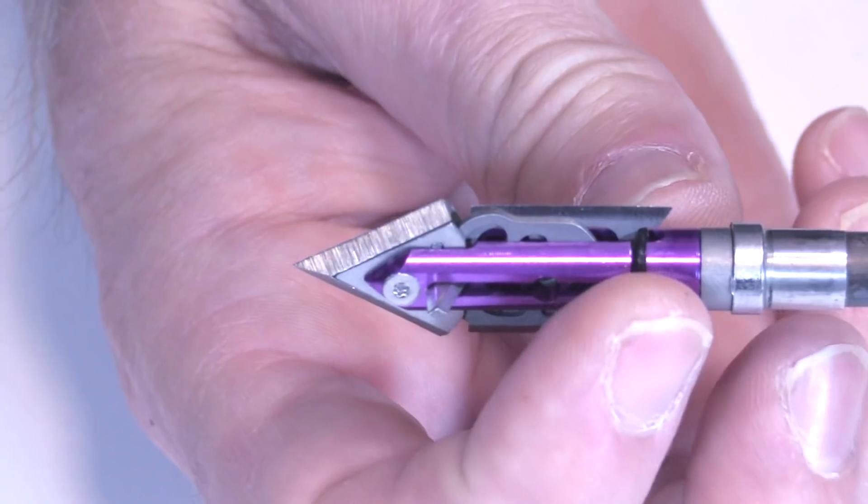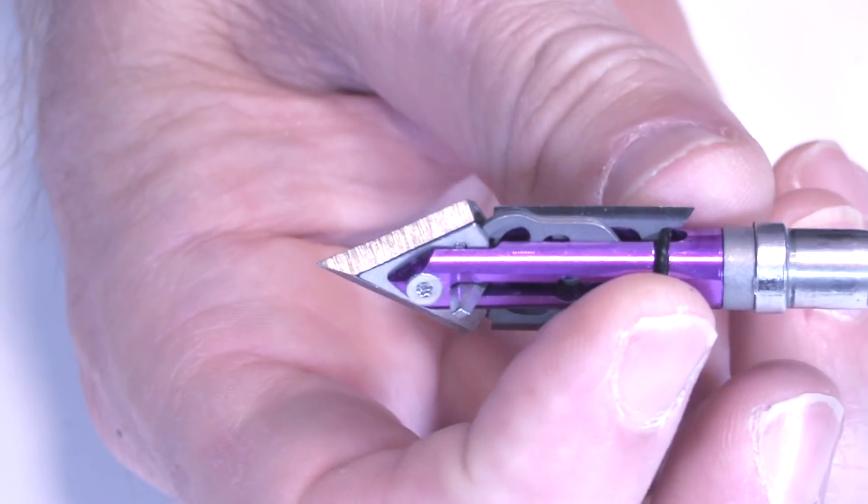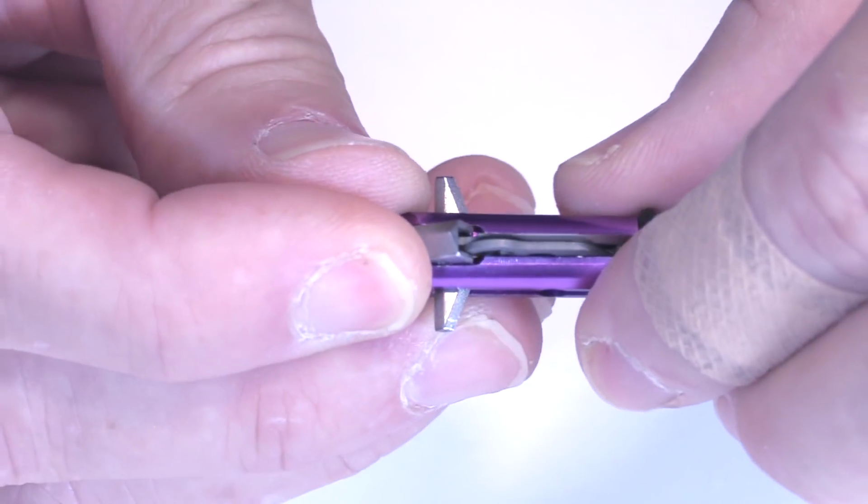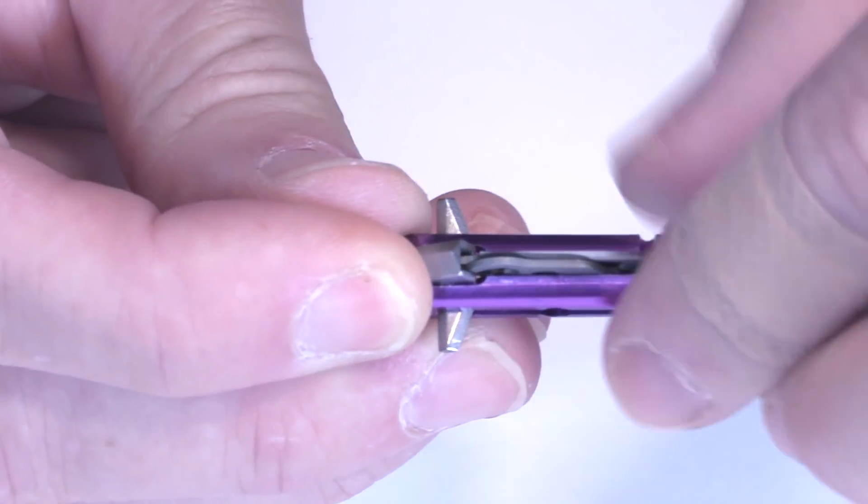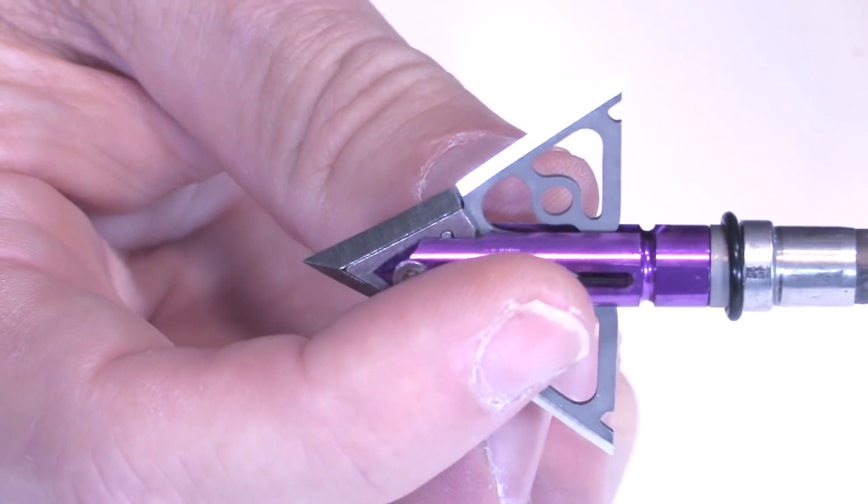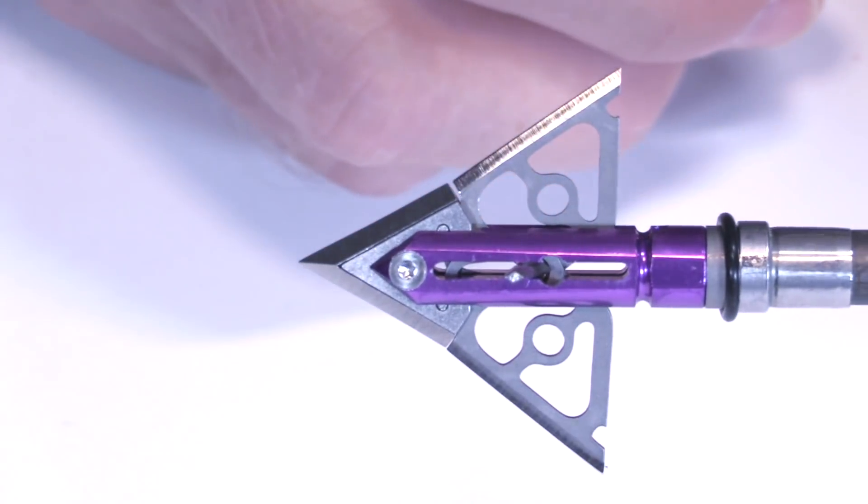But upon impact, the blades are held together by this little retention ring here. And so on impact this retention ring is forced back like that and then the pressure on these drive keys open the blades into their full position.